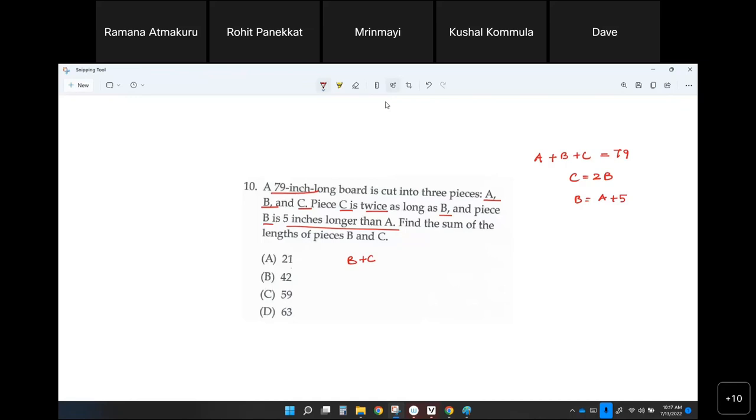Substitute 2B in place of C and then solve for A from this equation. What is A equal to? Isn't it B minus 5? Take that and substitute here. So A value is nothing but B minus 5, and then B is B, and then instead of C, I'm going to plug in 2B. Now you see, I have everything in the variable B.